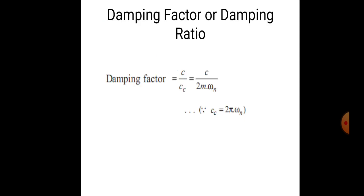The damping factor, or damping ratio, is defined as c divided by cc, which equals c divided by (2m·ωₙ), and this is also equal to c divided by (2π·ωₙ).